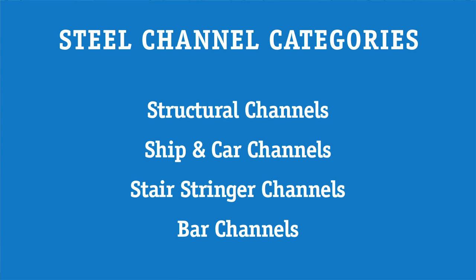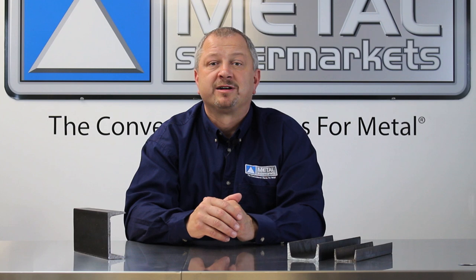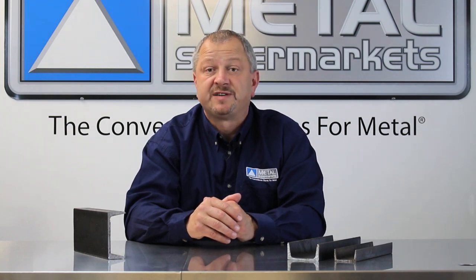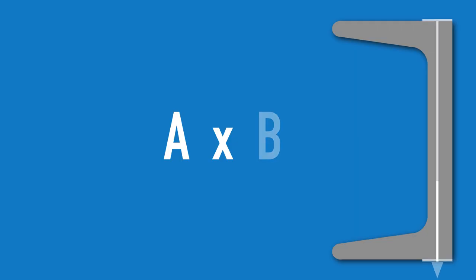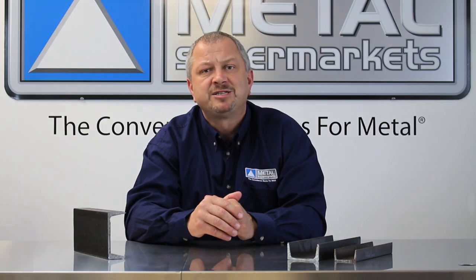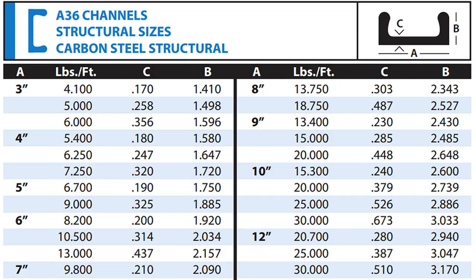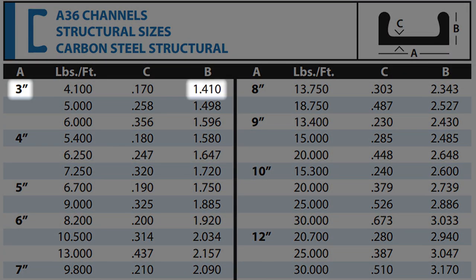Bar channel is a set of smaller channel sizes which have a depth range of three-quarters of an inch to two and a half inches. In North America, steel channels are specified using the channel depth in inches and the weight of the channel in pounds per foot — much like structural beams. If the weight is not provided, you can find it by measuring the channel depth, leg height, and the leg and web thickness.